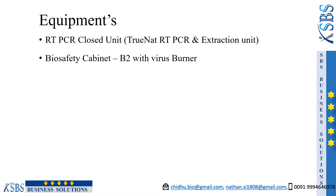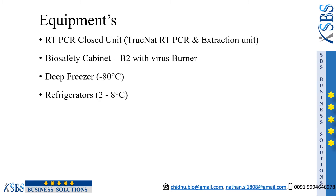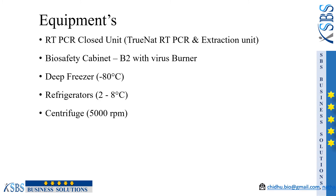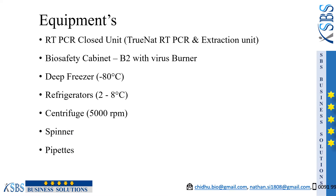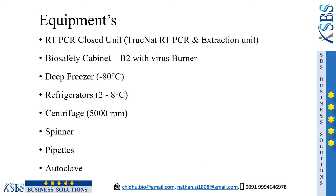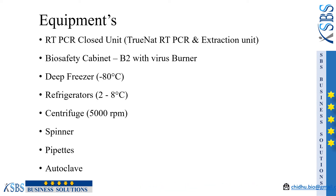Second one is a Biosafety Cabinet Level 2 with a virus burner. Then a deep freezer for RNA storage, a refrigerator at 2 to 8 degrees for kit and sample storage. Next, a centrifuge for blood samples to get processed for RT-PCR, a spinner, pipettes, and an autoclave for decontamination of Covid samples and the consumables used for testing the Covid samples.